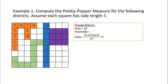Next we need to compute the perimeter of the orange district. For the perimeter, we'll be counting the length around the outside of the boundary. I'm going to use the cursor to help us do that — follow my cursor along, and remember that each square has a side length of 1. Counting around the exterior, we get a perimeter of 22. So the perimeter of the orange district is 22.